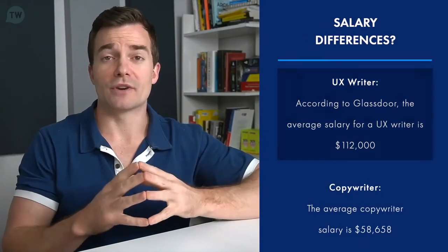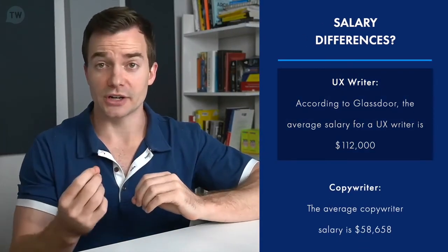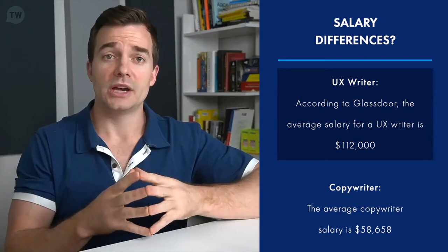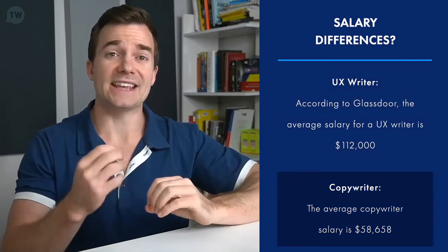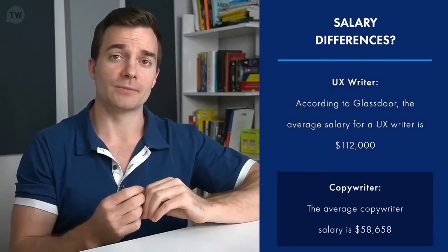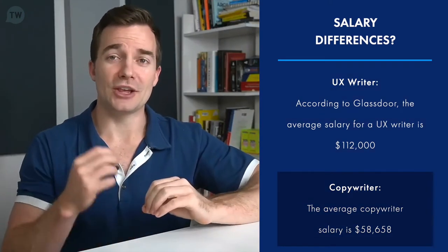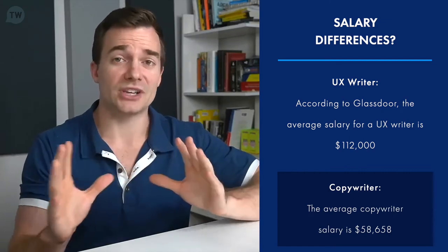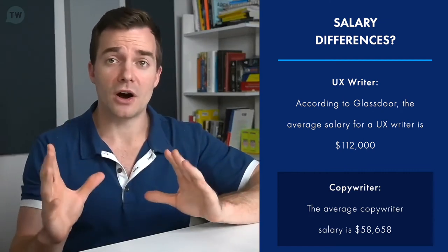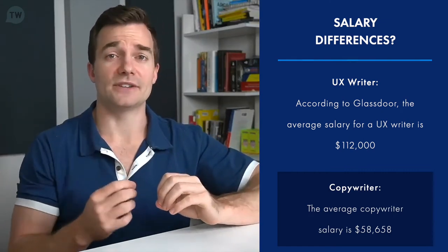You may be wondering about salary. The average salary for a UX writer is over $112,000 a year according to Glassdoor, and for a copywriter it's close to $58,000 a year. So if you're looking to make more money, the UX writer salary is your best option by far, with a significant difference of almost $50,000 more.